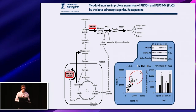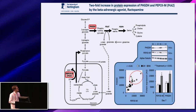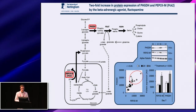We then looked at protein expression of PHGDH and PEPCKM. PHGDH is the initiating enzyme of that pathway. At day seven — following the major peak in mRNA expression — we see about a two-fold increase in expression of this enzyme. The same holds true for PEPCKM, again about a two-fold increase. In the scatter plot, each gray circle identifies an individual animal in the beta-agonist-treated group, and you see a coordinated increase — both enzymes are up-regulated in the beta-agonist-treated pigs.